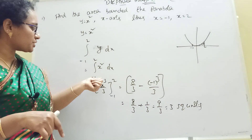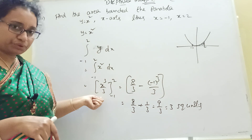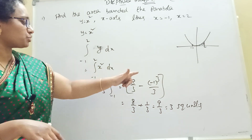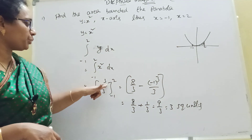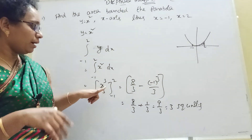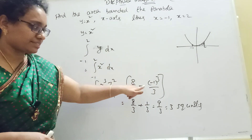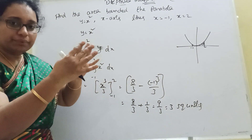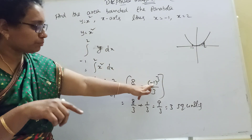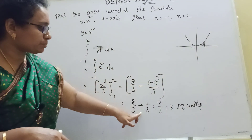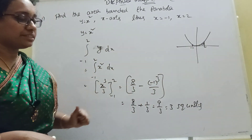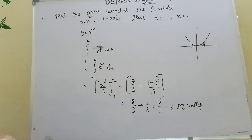Since y equals x squared, integration of x squared gives x cubed by 3. Applying the limits from minus 1 to 2: 2 cubed is 8 by 3, minus (minus 1) cubed by 3 which is minus 1 by 3. Therefore 8 by 3 plus 1 by 3 equals 9 by 3, which gives 3 square units.